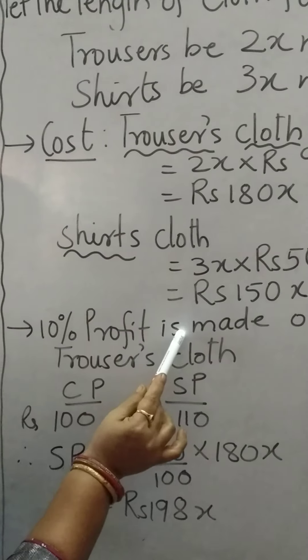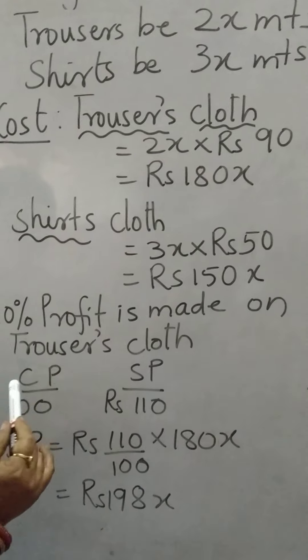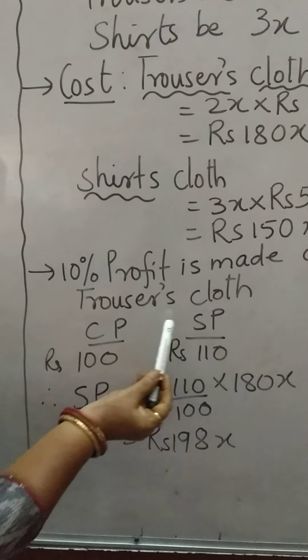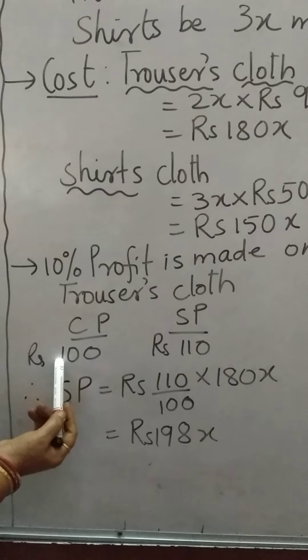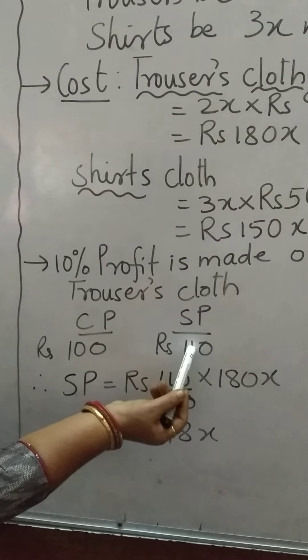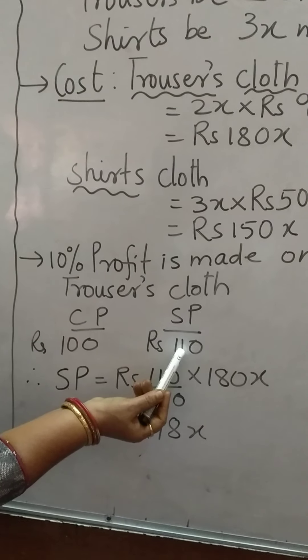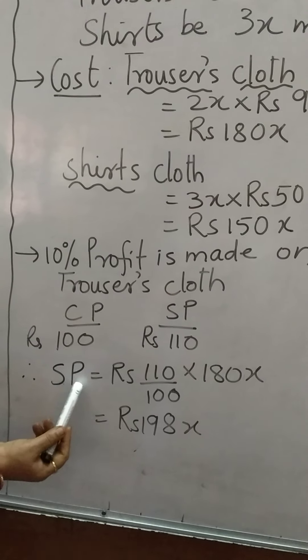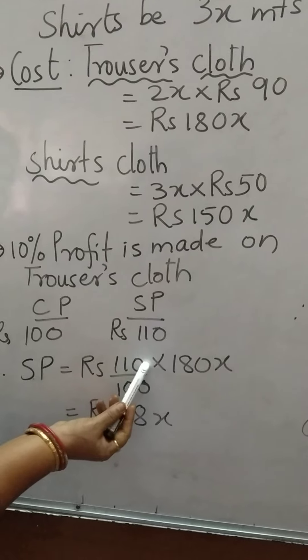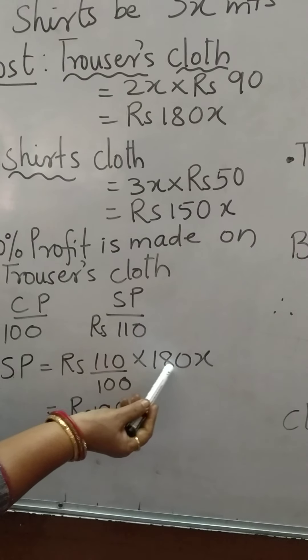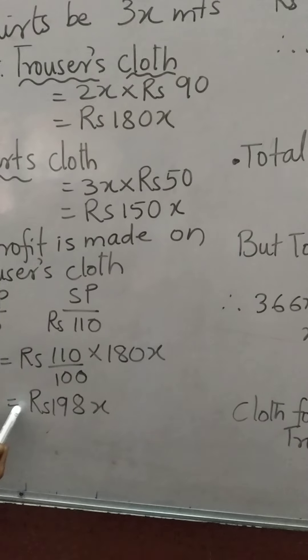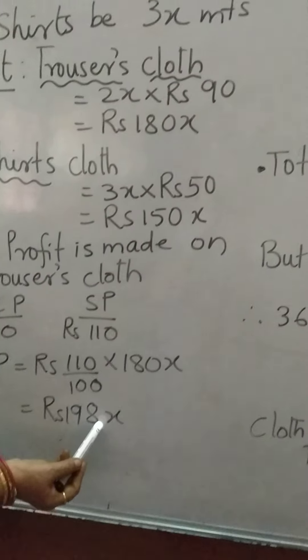10% profit is made on trouser's cloth. So CP is cost price, SP is selling price. 100, 110. So SP will be rupees 110 upon 100 into 180x, so we get rupees 198x.